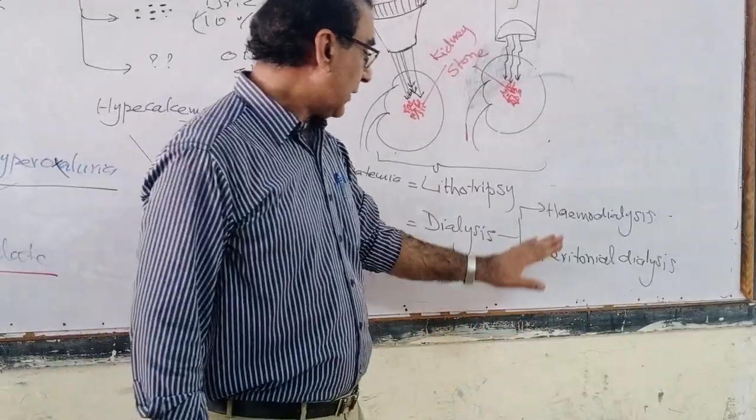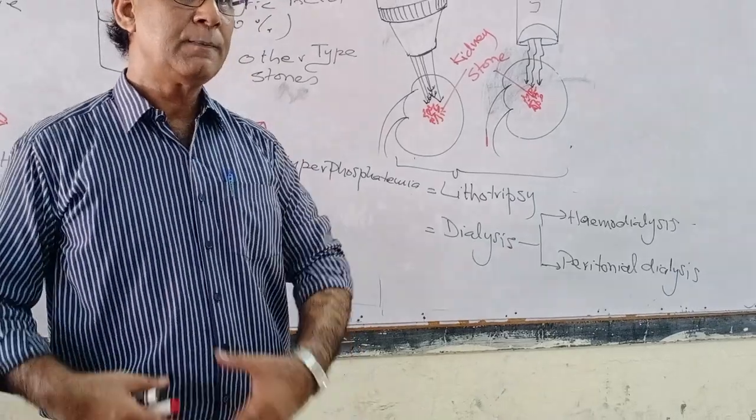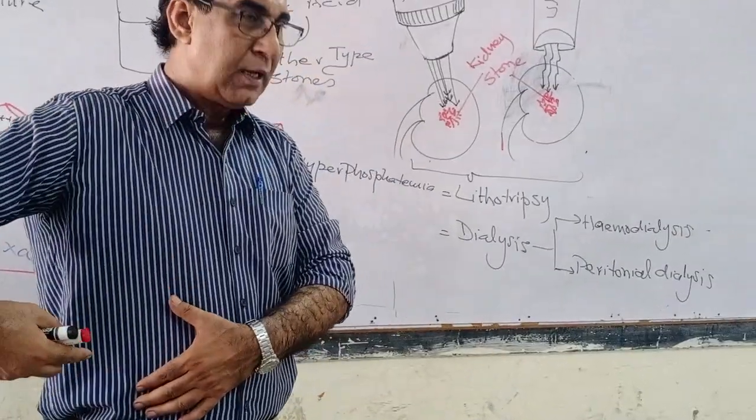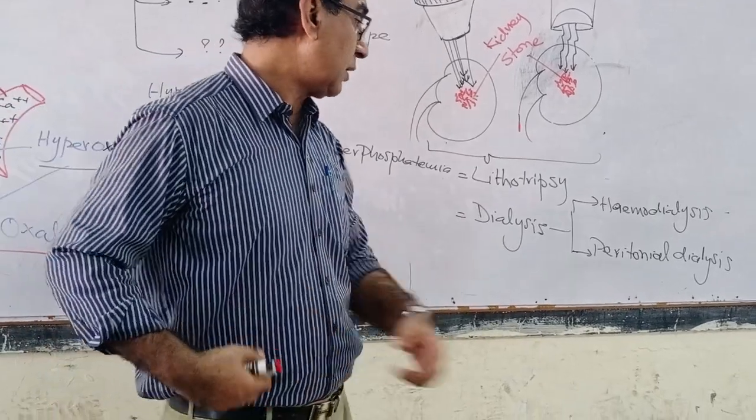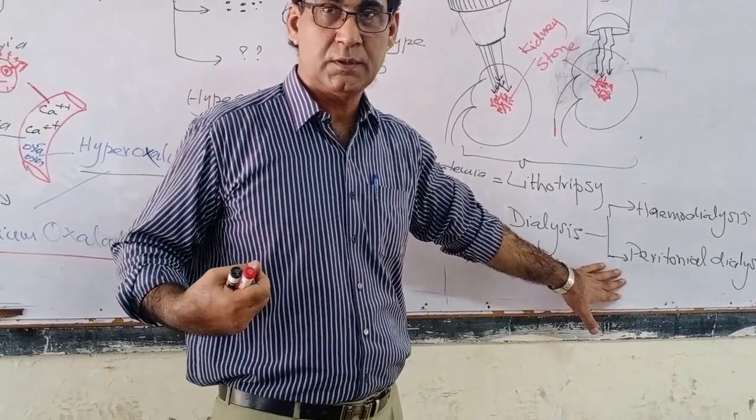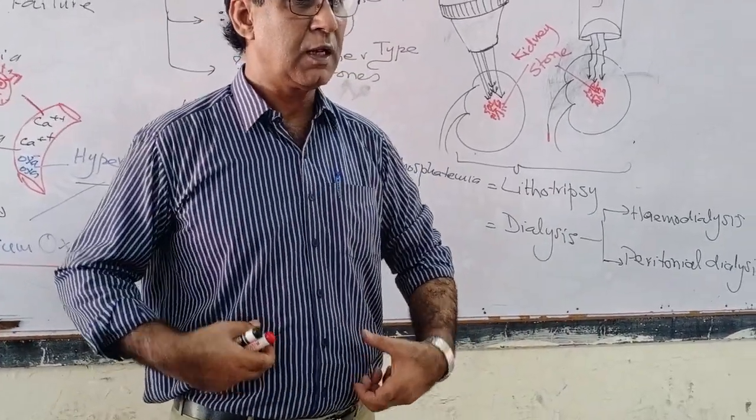Here, there is the second type of dialysis. That is peritoneal dialysis. When the physician or the surgeon puts the fluid that can absorb the extra amount of urea into your peritoneal cavity.